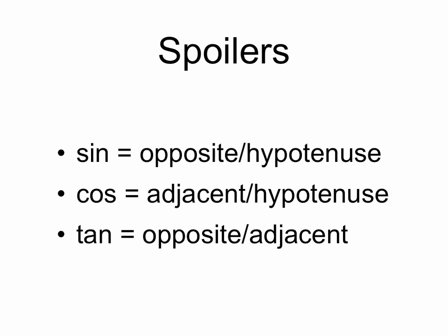Definitions for sine, cosine, and tangent. Here's the summary: sine is opposite over hypotenuse, cosine is adjacent over hypotenuse, and tangent is opposite over adjacent.